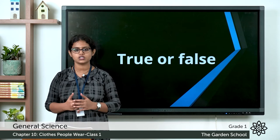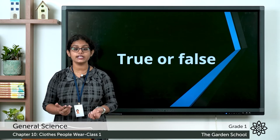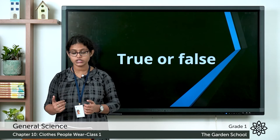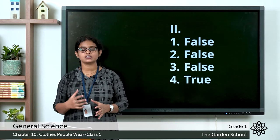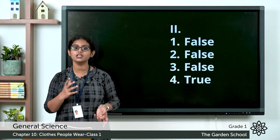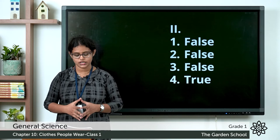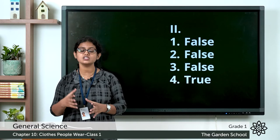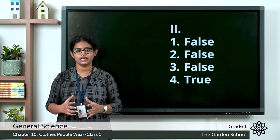Next exercise: tick the true statements and cross the false ones. Statement 1: Cotton clothes keep the body warm — False; cotton clothes keep the body cool. Statement 2: It rains in winter — False; it rains in rainy season. Statement 3: We use an umbrella during winter season — False; we use an umbrella during rainy season or summer season. Statement 4: If we get wet often, we may fall ill — True.